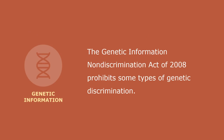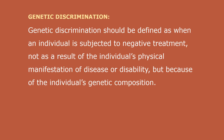The Genetic Information Non-Discrimination Act of 2008 prohibits some types of genetic discrimination. Genetic discrimination occurs when people treat others differently because they have, or are perceived to have, a gene mutation that causes or increases the risk of an inherited disorder. It may also refer to discrimination based on the genotype of a person rather than their individual merits. Genetic discrimination should be defined as when an individual is subjected to negative treatment not as the result of a physical manifestation of a disease or disability, but because of the individual's genetic composition.